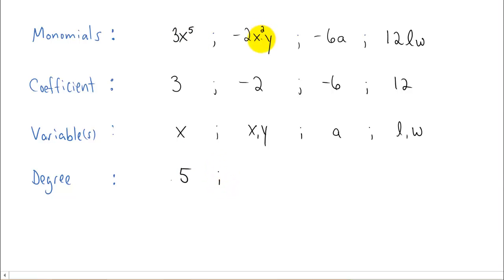In the next example, though, we have x that's raised to a power of 2. And we also have y that doesn't have a power on it. But secretly, we don't write it, but there's a power of 1 on that y. You sum those two powers together, and you get 2 plus 1 is 3. So the degree of this term here, this monomial, is 3.